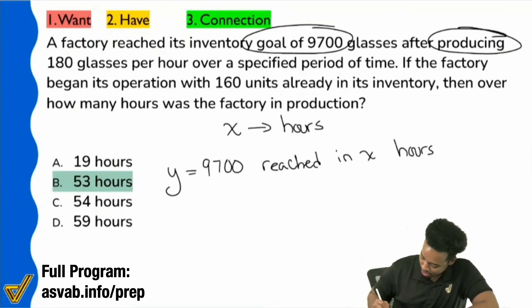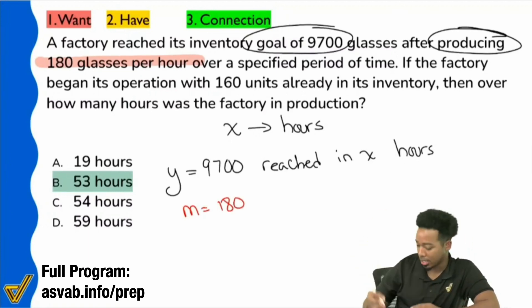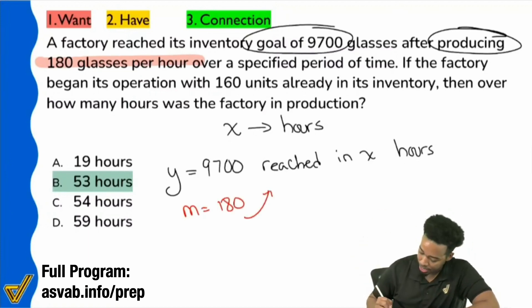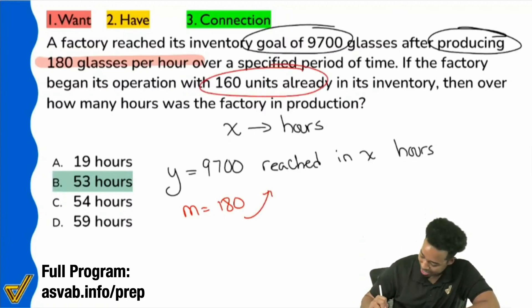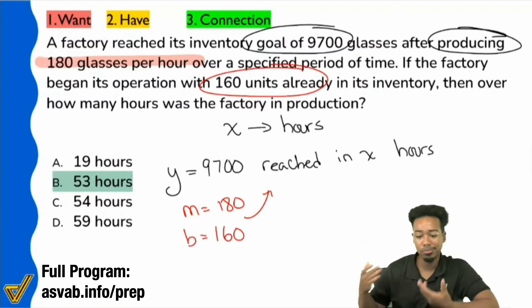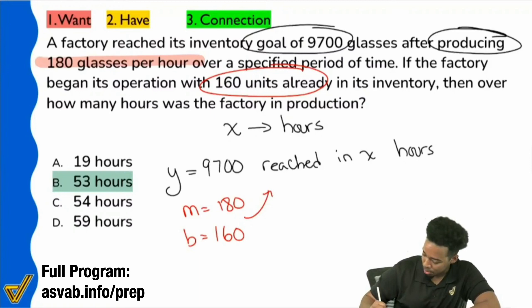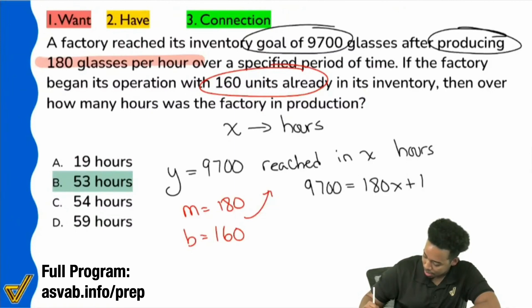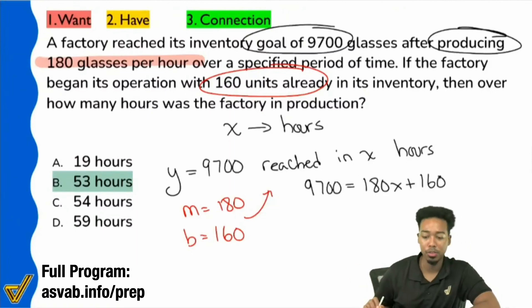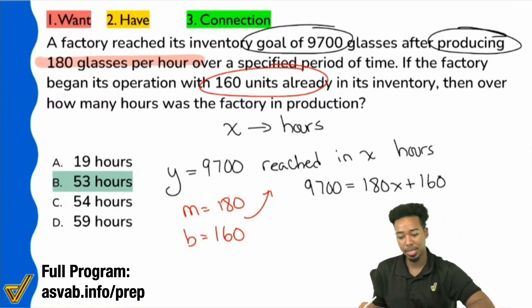So here, the rate that we have is going to be 180 glasses per hour. And that's positive because we're producing — it's going up. And then we had the 160 units already there. Once you have that, all you've got to do is set up, solve, and you're done. So let me go ahead and just set up the problem right here. It'll be 9,700 equals 180 times X plus 160. And then all you have to do is solve that, and you will get B.